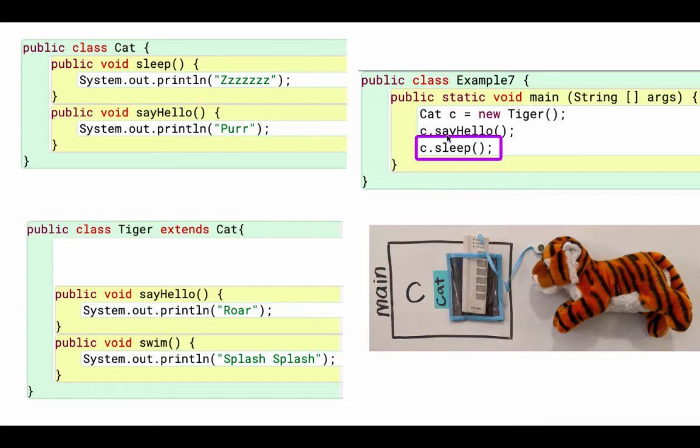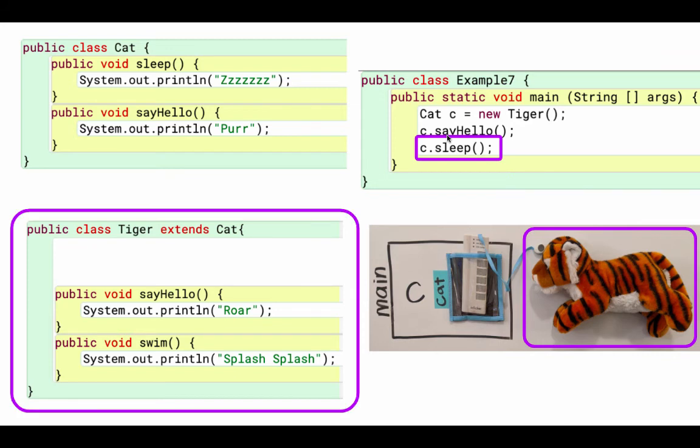Now we say c dot sleep. Again, c is referencing a Tiger. Even though the variable c is of type Cat, we still use the fact that c is referencing a Tiger to mean we look in the Tiger class first. So we look in the Tiger class, and we don't find a sleep method.